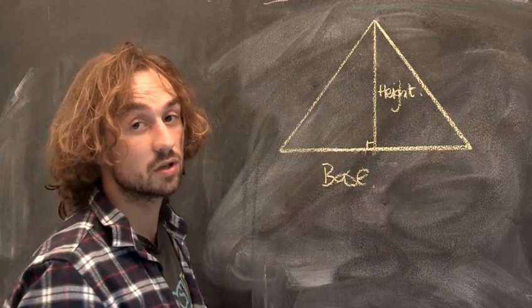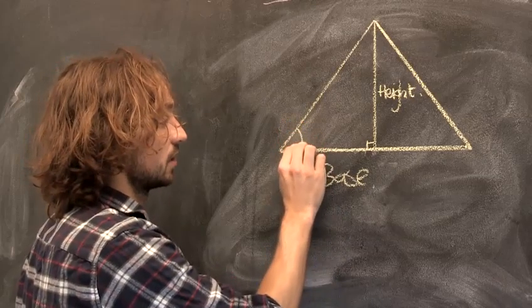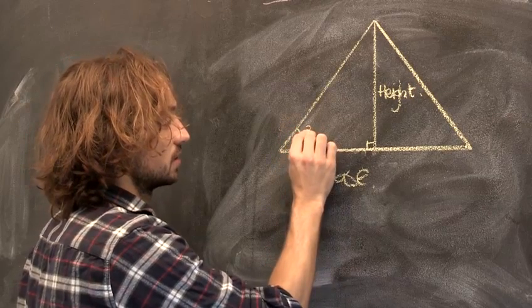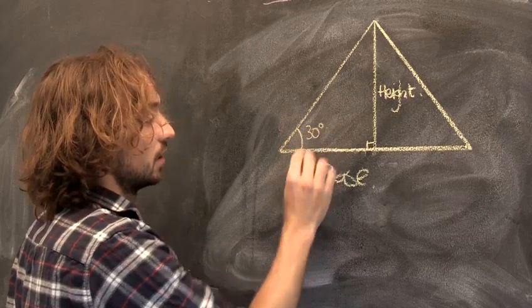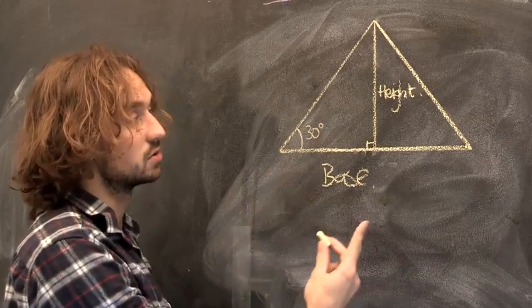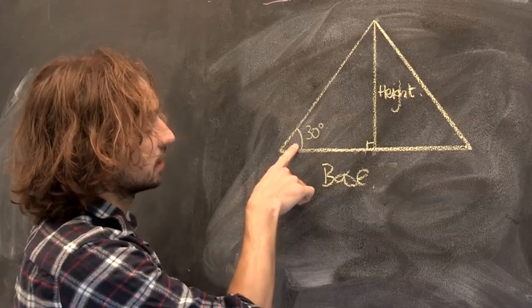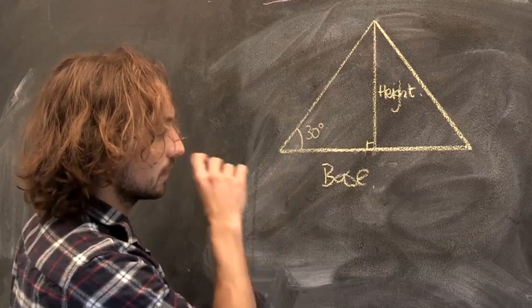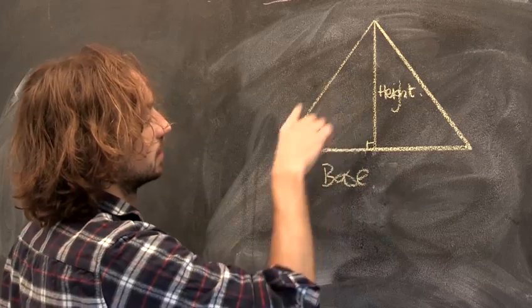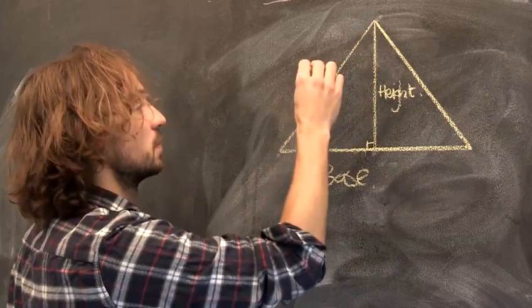The other way is to use trigonometry. So you can figure out this angle here. Let's say this angle here is 30 degrees. Again, you could either use a protractor or you could use trigonometry to find this one here. So if you know this length here is 30 degrees, and this length here is say, this length would be say 10.